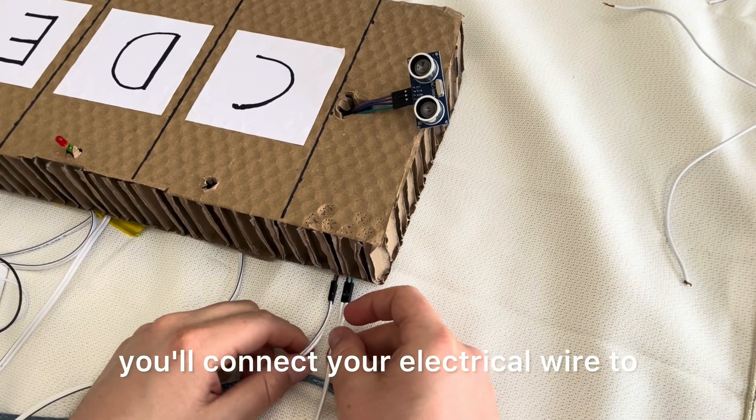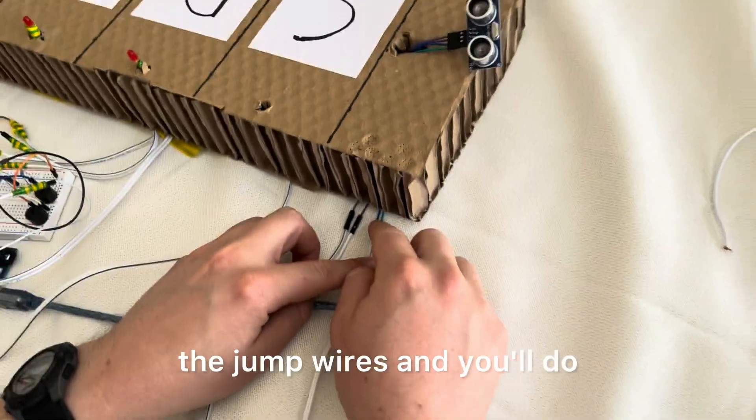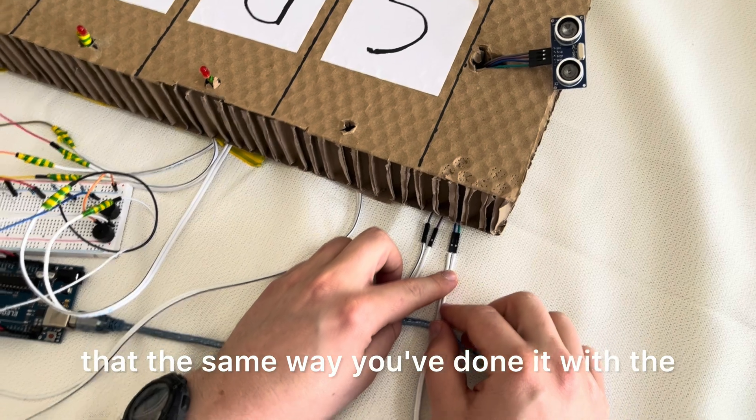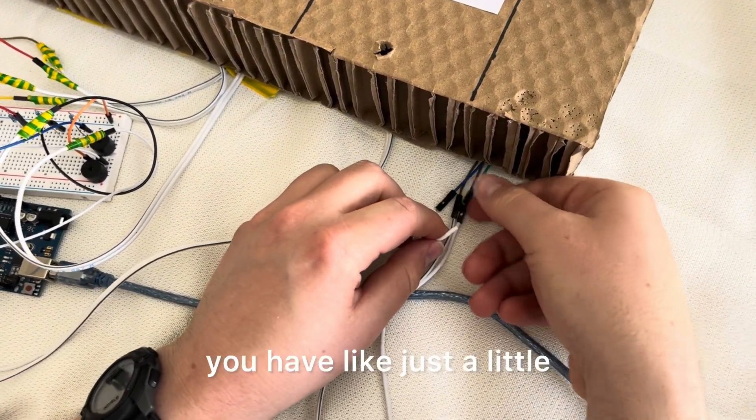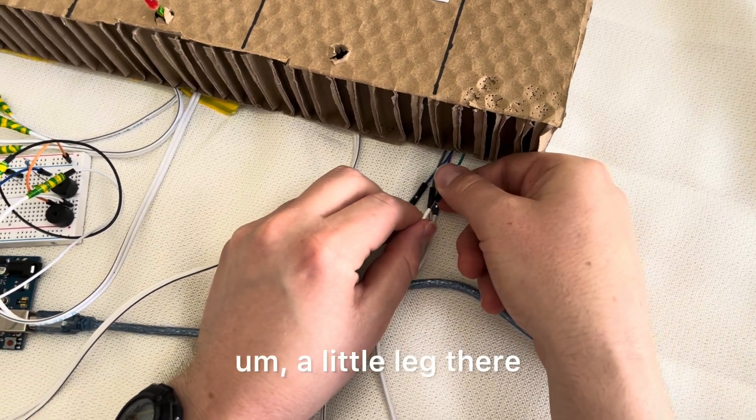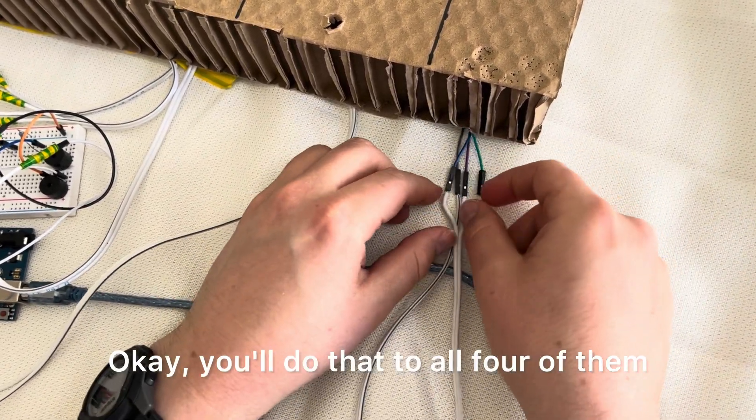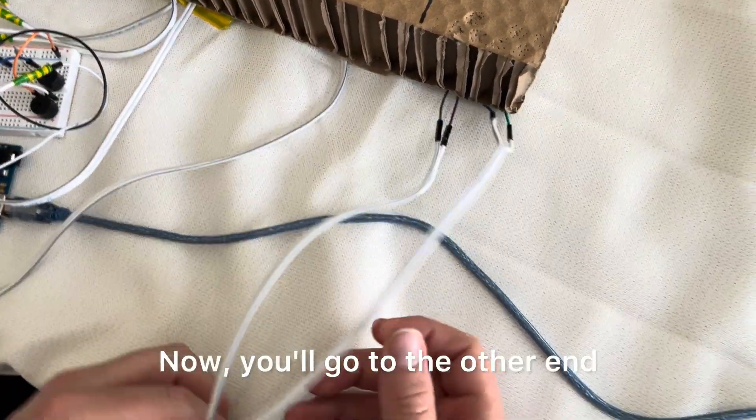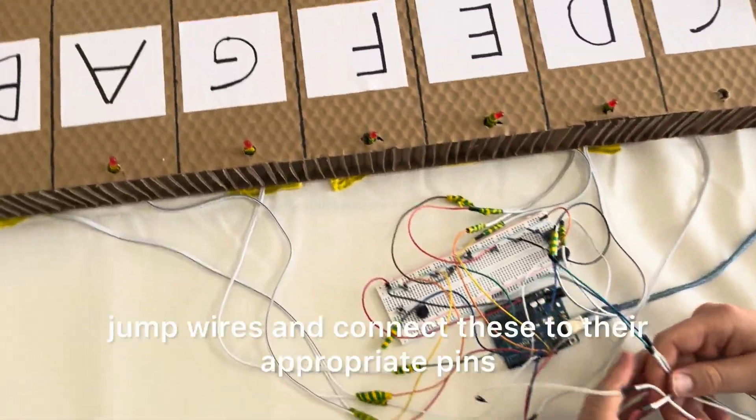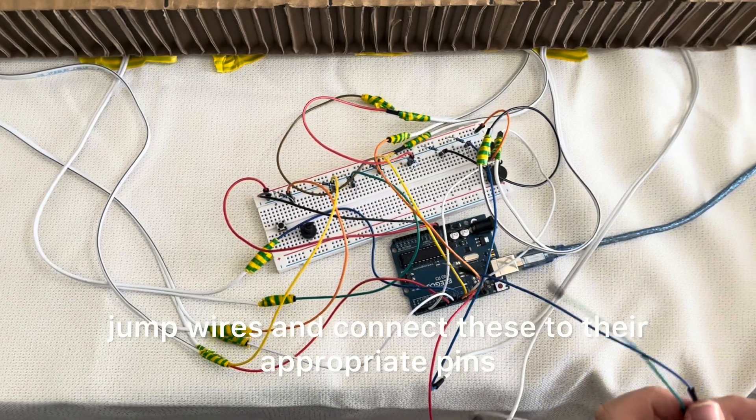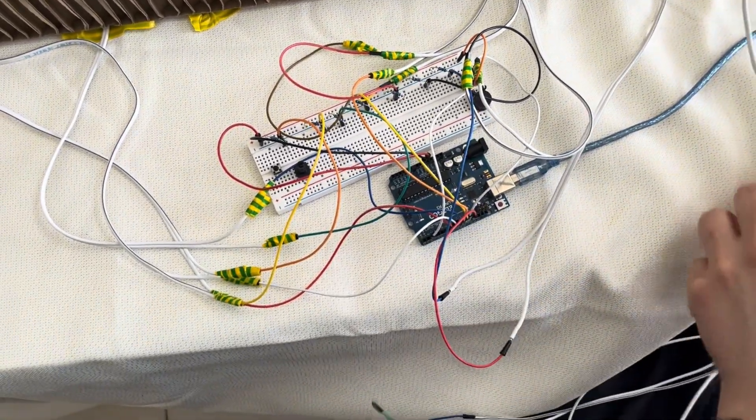So once we have that, you'll connect your electrical wire to the jump wires, and you'll do that the same way you've done it with the lead. As you can see, you have just a little leg there, and you'll just stick it in. You'll do that to all four of them. Now, you'll go to the other end and connect another four jump wires, and connect these to their appropriate pins.